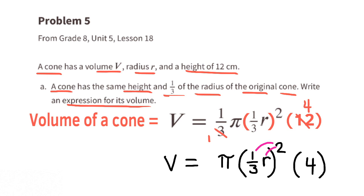Since the order doesn't matter we can move r squared to the end. One-third squared or one-third times one-third is one-ninth. One-ninth times four is four-ninths.